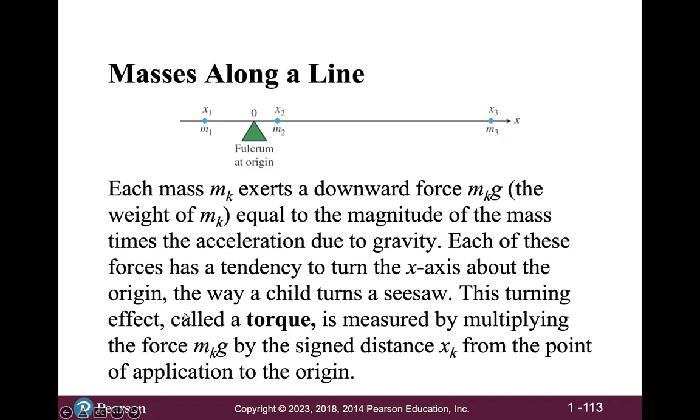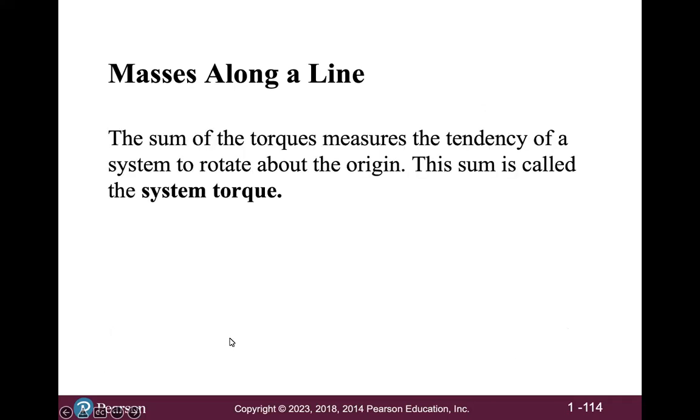This turning effect, called a torque, is measured by multiplying the force, m sub k times g, by the signed distance x sub k from the point of application to the origin. The sum of these torques measures the tendency of a system to rotate about the origin. This sum is called the system torque.